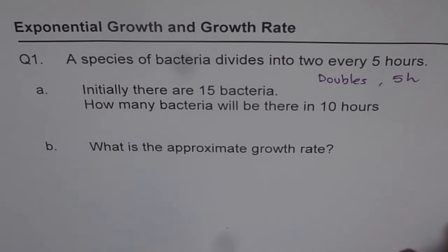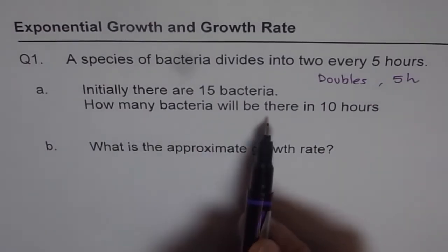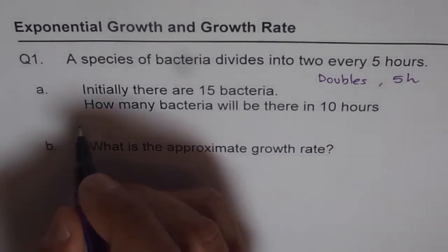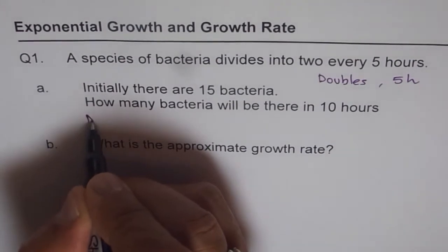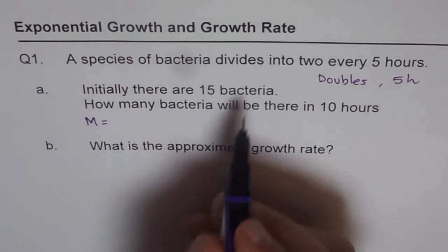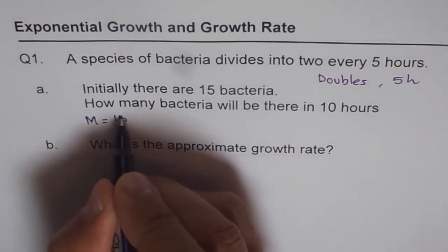From here we can always find the equation first, and then find how many bacteria will be there in 10 hours. So we can write down the equation as, let's say at any instance the number of bacteria is M. In that case, M will be equals to initial number of bacteria, which is 15 given to us, times their doublings.